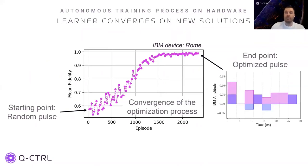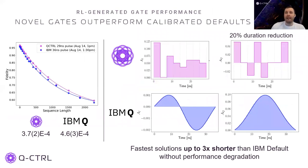Here you can see the progress of the optimization process on the IBM device. Our starting point is a random pulse. The plot shows the mean fidelity versus the reinforcement learning step. When satisfied with the fidelity value, we take the final pulse and test it against the IBM default pulse using randomized benchmarking. On the left, you can see randomized benchmarking done with the IBM default RX90 and a 29-nanosecond Q-Control optimized pulse. Even though the Q-Control pulse is 20% shorter and should be affected more by leakage, its performance is more than 20% better.